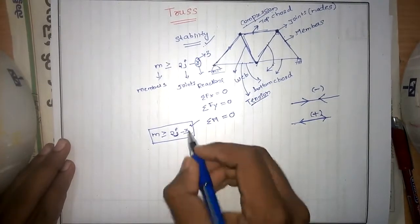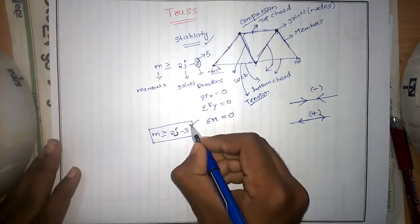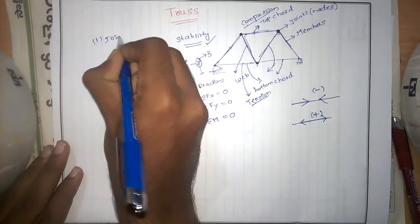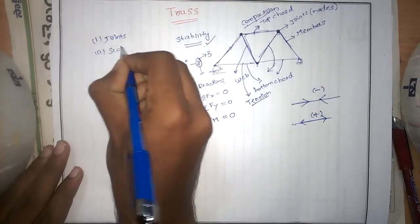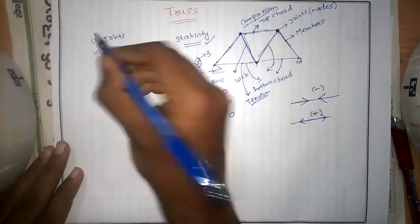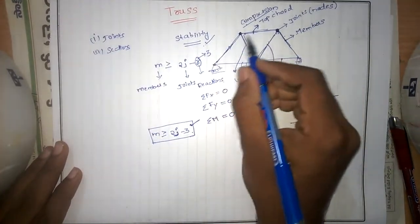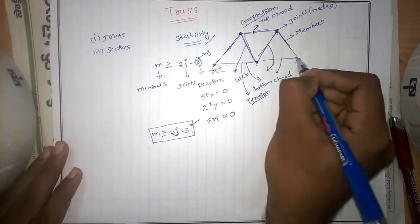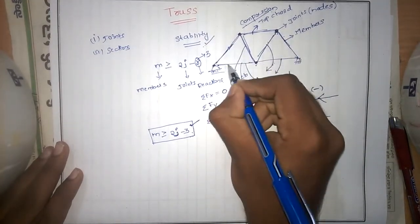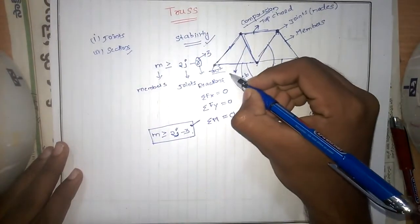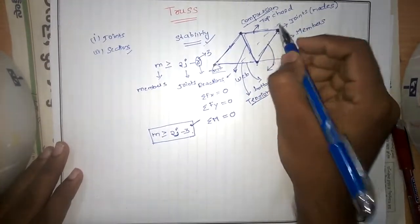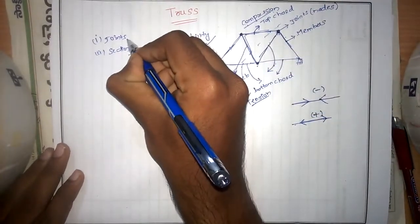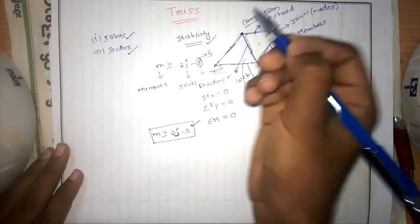A truss can be solved by two methods. One is the method of joints, and the other is the method of sections. In the method of joints, since the total structure is in equilibrium, each joint will also be in equilibrium, and we take each joint to find the forces induced in its members. In the method of sections, we cut the truss at a section and find the forces induced in the cut members.